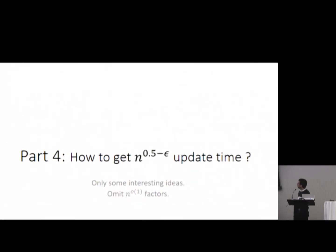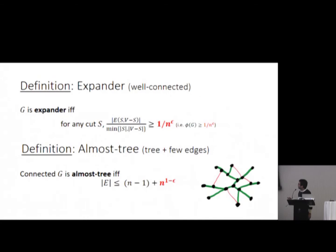Now I will go into some more detail. I will tell some interesting ideas and I will omit some small factors. In this talk, I will say that the graph is expander if for any cut of the graph, the number of edges across the cut over the small side of the cut is at least this number, one over n to the epsilon where epsilon is a small constant. Basically the expansion of the cut is at least this number. And I will say that the graph is almost tree if basically it's a tree plus few edges. The connected graph is almost tree if the number of edges is n minus one plus something sublinear. So you should think of it like this. This is expander, this is almost tree.